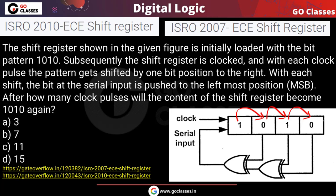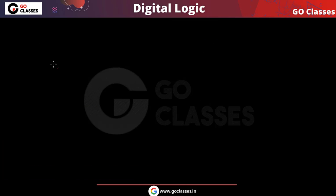The initial content of the register is 1010. The question asks: after how many clock pulses will we again get this same content 1010? This is what we need to find.